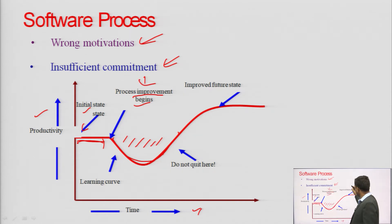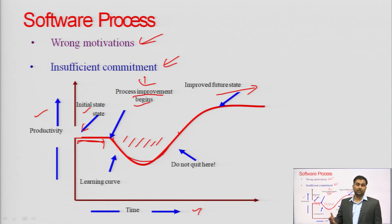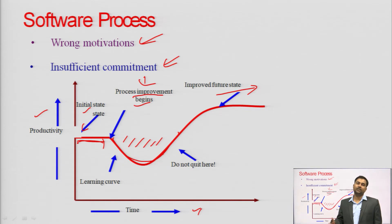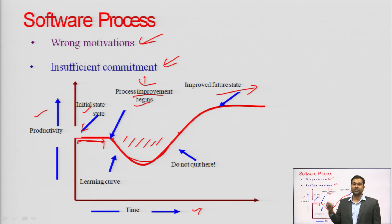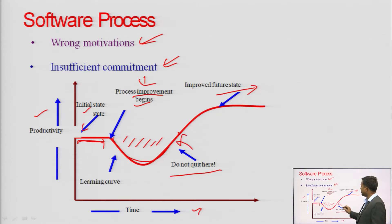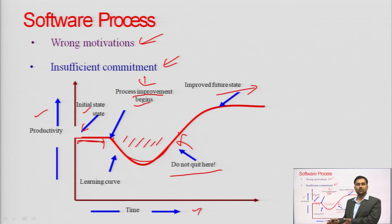The graph shows process improvements and improved future states. As you keep updating your software in the future — like Microsoft Office which has had multiple versions with day-by-day updates, or WhatsApp which added status, multiple features, and security updates over time — challenges from end users are identified and improved through software updates. You don't quit when a challenge comes; you face the problem, find a solution, update your software, improve it, and deploy it to the market.